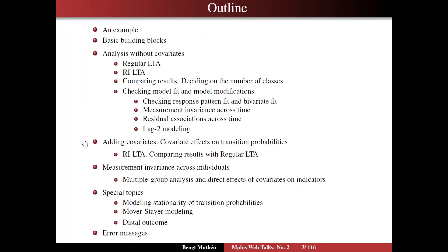Then I'll add covariates, focusing on covariate effects on transition probabilities, where we have some new nice output features. I'll discuss how to do that in the RILTA context and compare results with the regular LTA. Then I'll turn to the interesting topic of measurement invariance across individuals — concepts like item bias. I'm going to take two approaches: the typical multiple group analysis, and the approach of using direct effects of covariates onto indicators, and I'll discuss why I think that's preferable in this case.